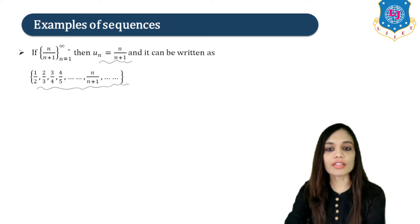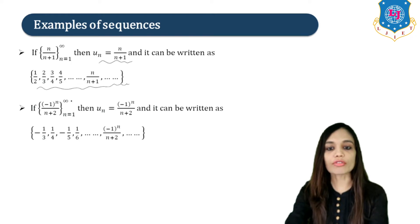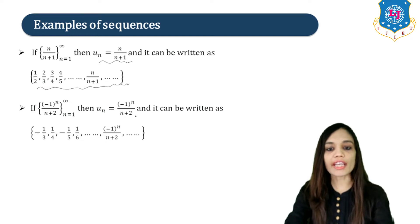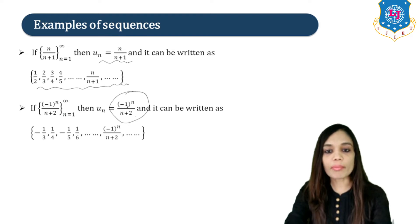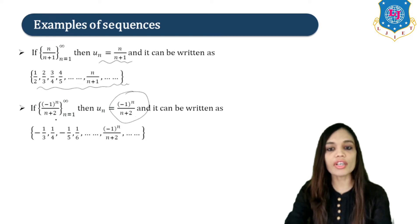Next, consider the sequence {(-1)^N / (N+2)}, N=1 to infinity. Here the Nth term is (-1)^N / (N+2). Putting N=1 gives U1 = -1/3. Putting N=2 gives U2 = (-1)^2 / 4 = 1/4, and so on. This is the infinite sequence (-1)^N / (N+2).